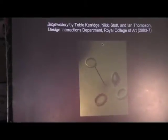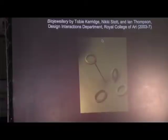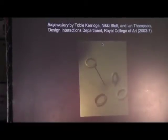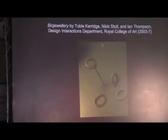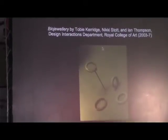Another piece from the MoMA show is biojewelry — rings made from bone cells taken from two partners making a commitment to each other. They grew bone cells on the scaffold of these rings, then inserted a precious metal insert, as if wearing your partner's bone on your hand wasn't precious enough. This comes out of the Royal College of Art in London's Design Interactions program.